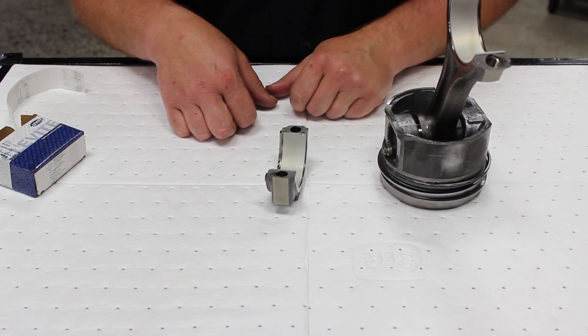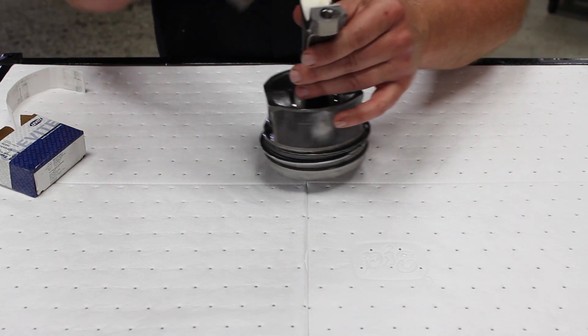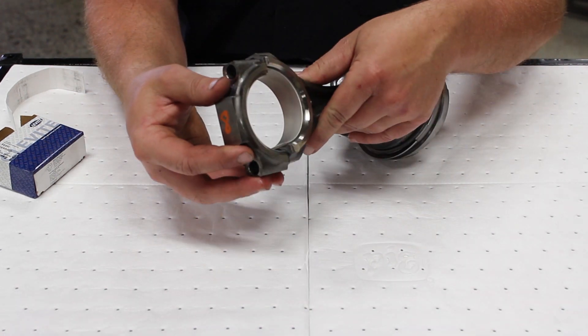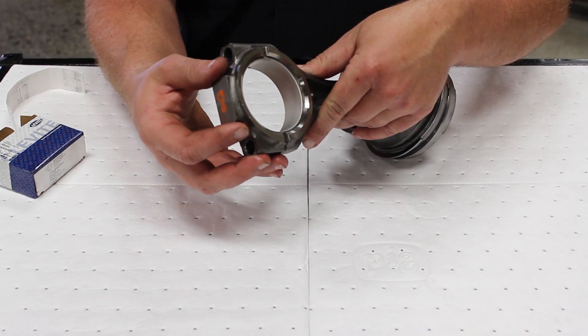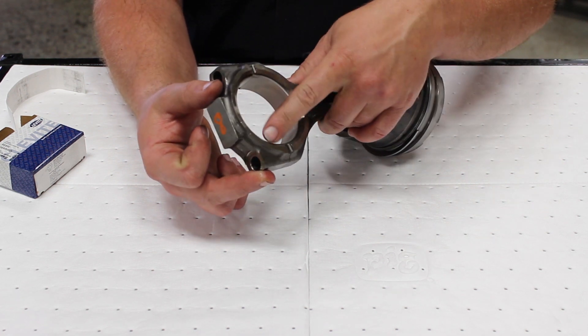It is possible to flip flop these. Another way you can double check yourself is just put the cap on the rod like so and make sure that your bearing lines up.